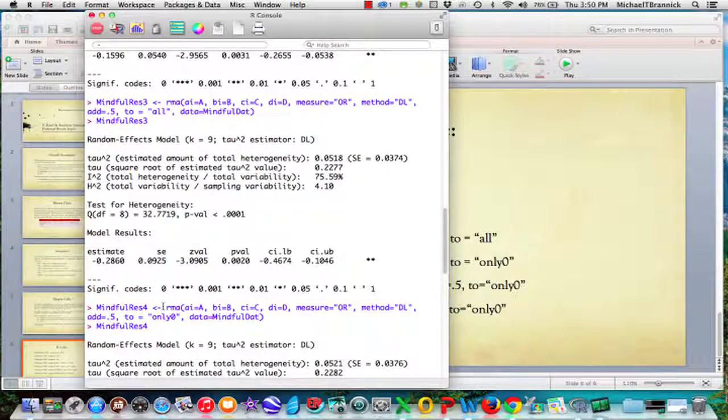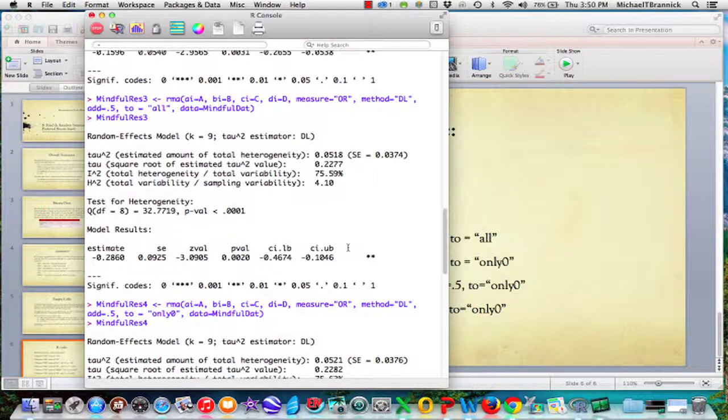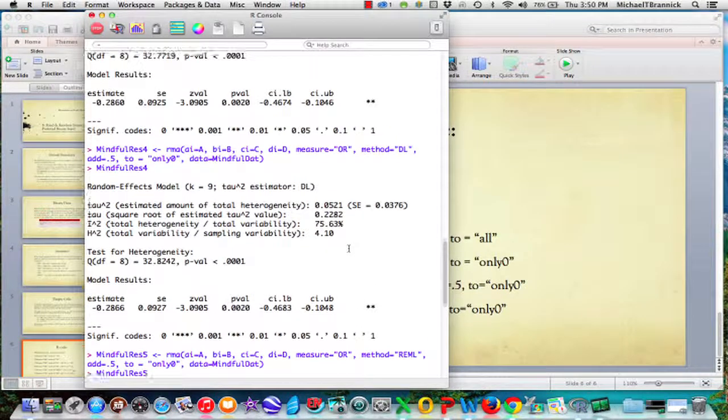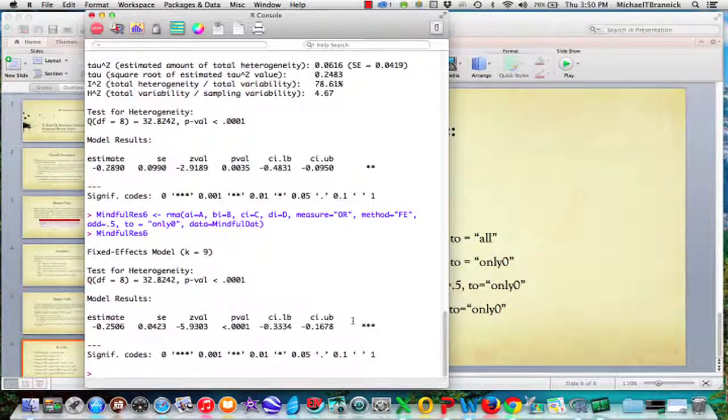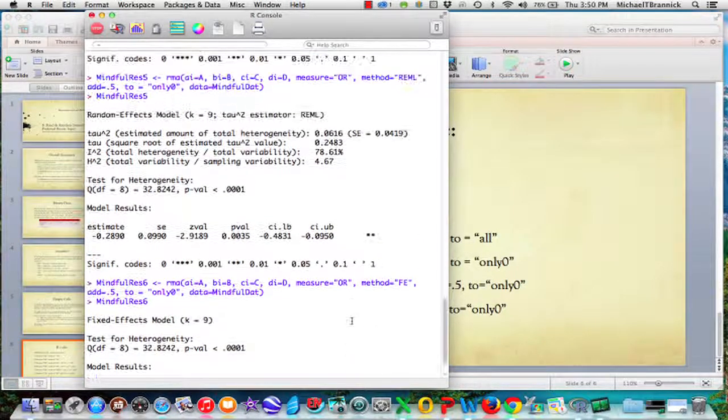That's number three. Number four: we're still doing Metaphor with the same data, odds ratio. Add 0.5, and now we're only going to add that 0.5 to the tables that have zero. You know because we just looked there's only one of those. We've got 2277, 2282, 75, 75, -28, -28. Very similar results. That's not surprising given the data.